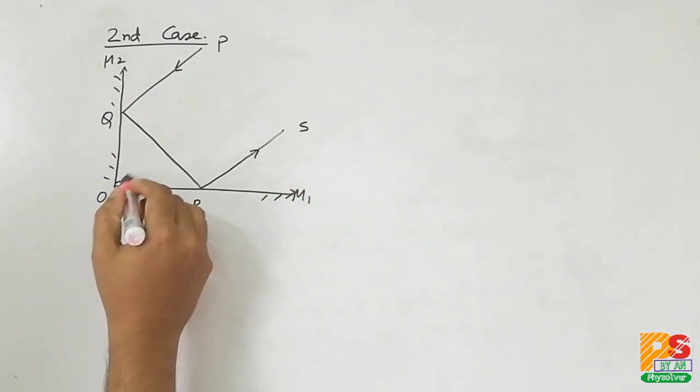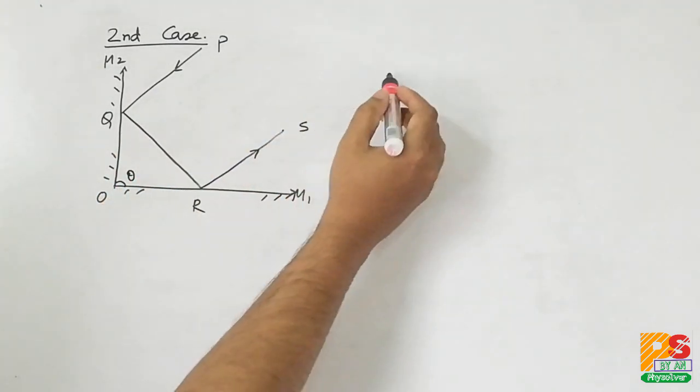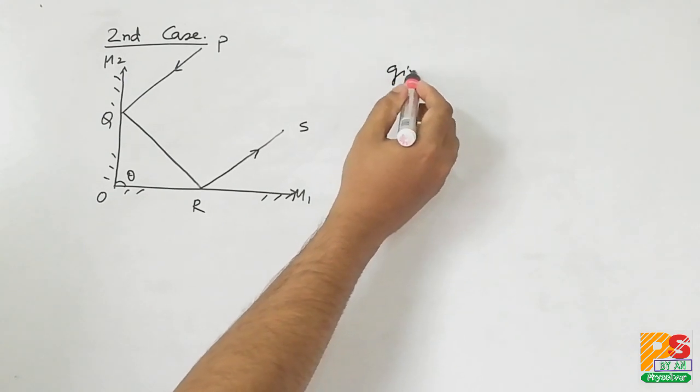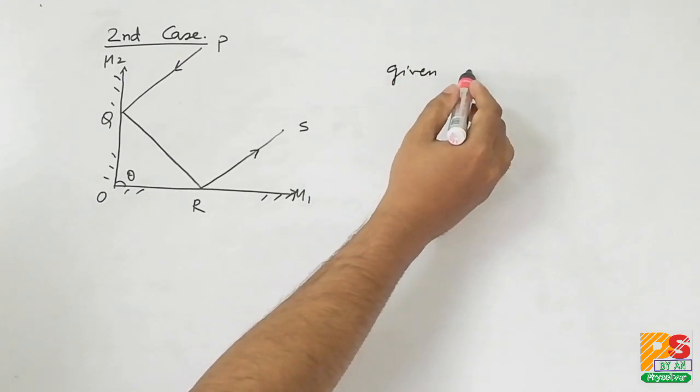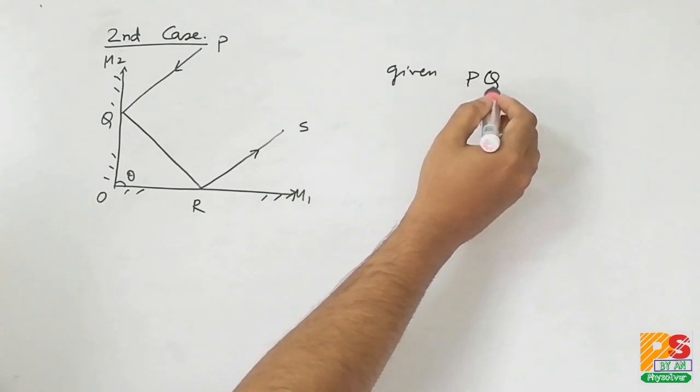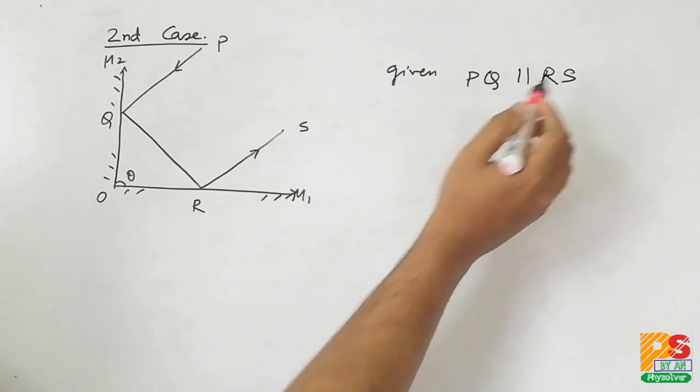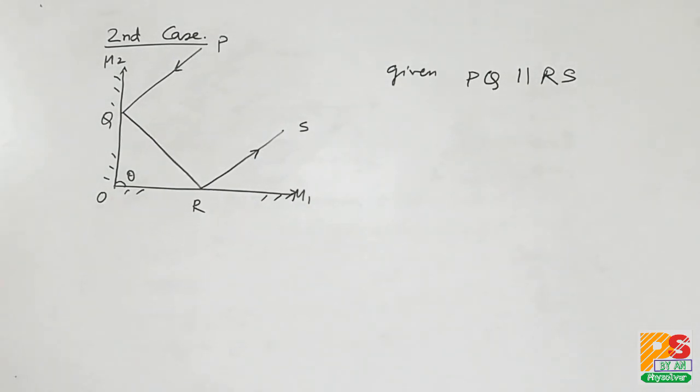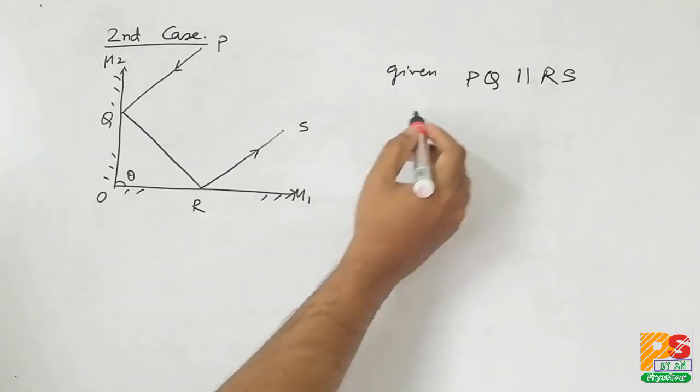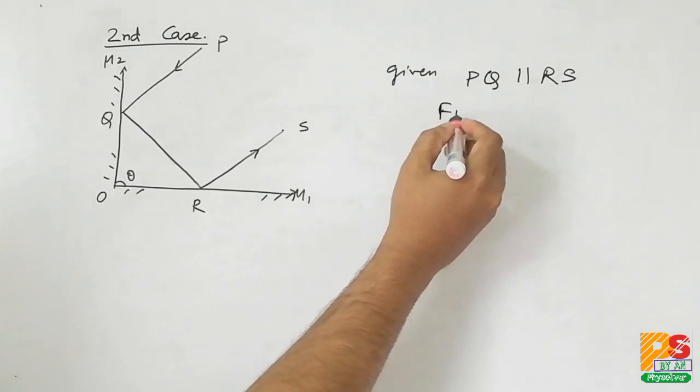As you can see, incident ray is PQ which is parallel to the emergent ray RS, and we have to find theta.